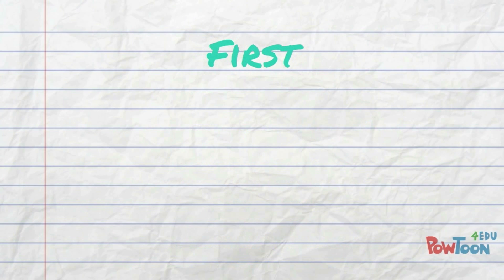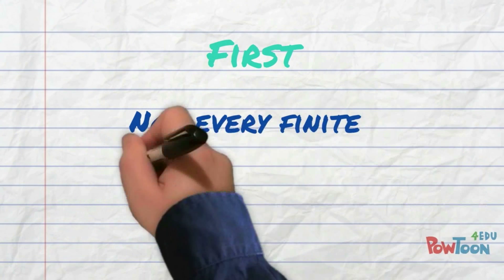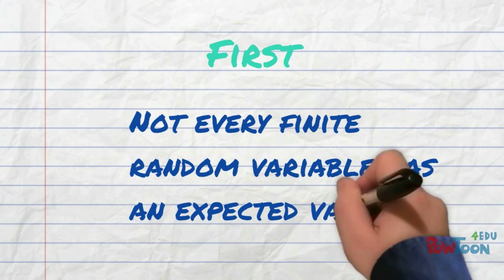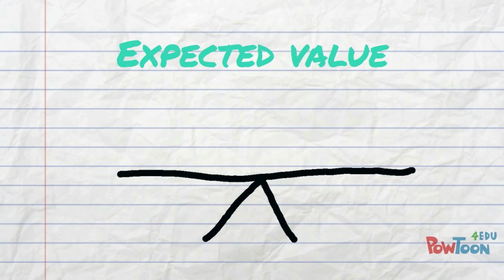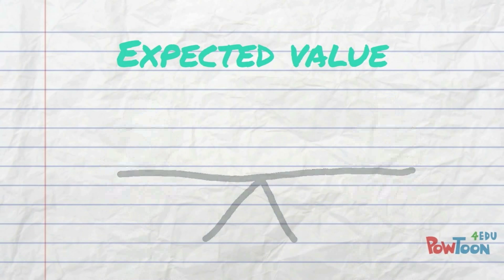First, it is not always true that a finite random variable has finite expectation. The expected value is the balance point of the density of the function. If there is a lot of probability on both the positive and negative side, there might not be a balance point.